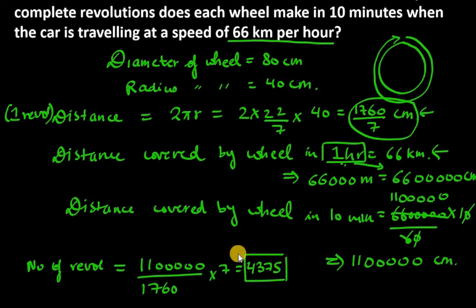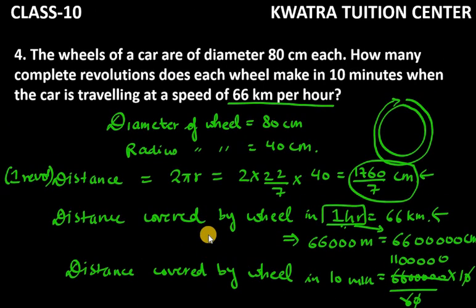You will get the answer as 4,375. It means that how many revolutions are going to be in 10 minutes. So what have we done? First, we have taken distance travel to one revolution. Then, we have taken distance travel to one hour. We have taken distance travel for 10 minutes. Because they told us that we need 10 minutes. We need revolutions.